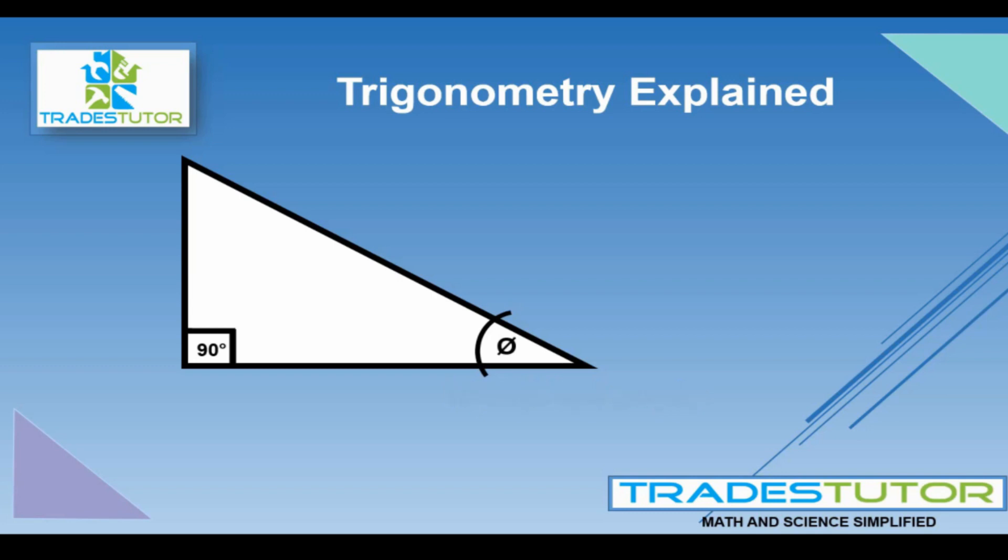If we go straight across from that, we call that side the opposite. If we go right to the side, or you could say adjacent to the angle, we're going to call that the adjacent. And then the third one is straight across from the 90. That's the hypotenuse. And that's always going to be the way these are named.